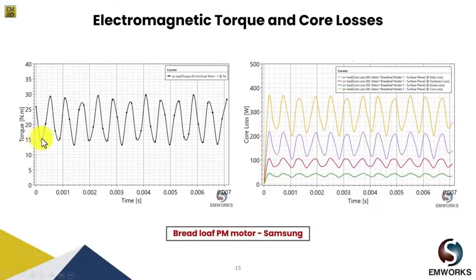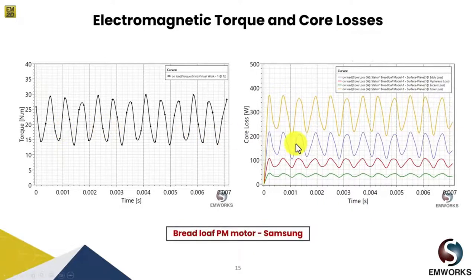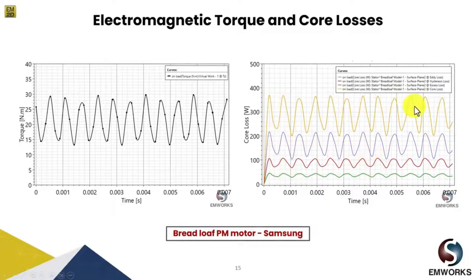Here we have its on-load torque, which is around an average of 22 Nm. Since we haven't skewed, it has high torque pulsation. We also obtained its core loss. Using the EMWorks 2D software you can segregate the total core loss into its eddy losses, hysteresis losses, and excess losses. You can then see the total core loss, and if you take the simple average of this waveform, you can find the exact core loss magnitude.